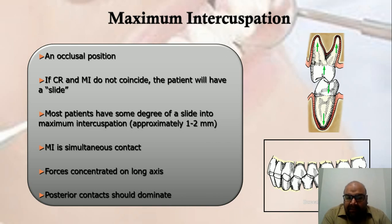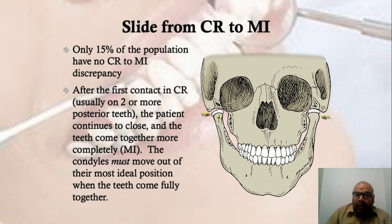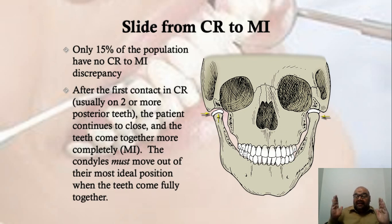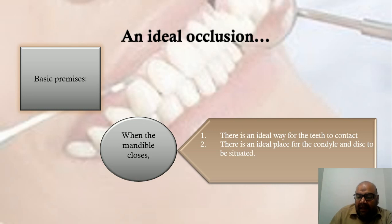This slide from centric relation to maximum intercuspation is known as 'long centric.' The ideal occlusion — where centric relation and maximum intercuspation occur simultaneously — is only found in about 15% of the population. In most other individuals, teeth contact in centric relation with one or two teeth first, then slide into maximum intercuspation. These two concepts — centric occlusion and centric relation — define the ideal position of teeth and the condyle.